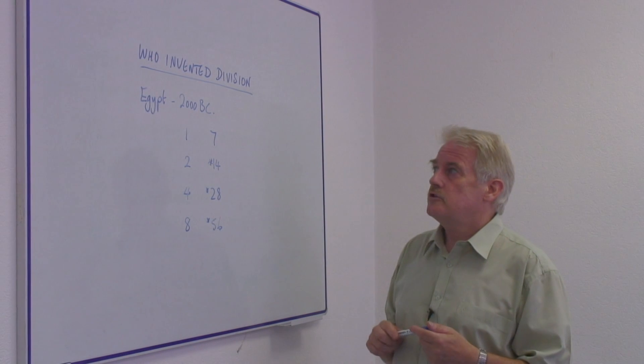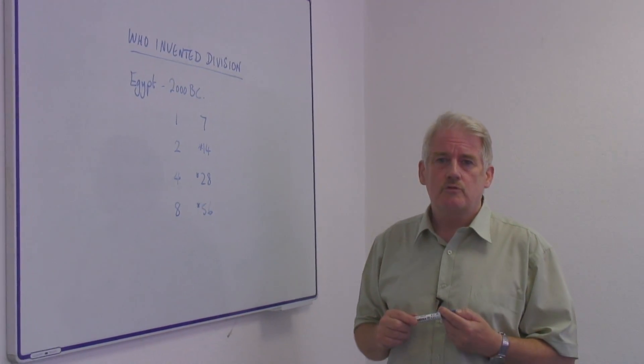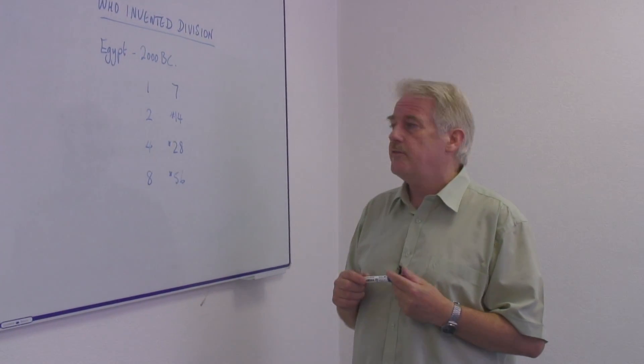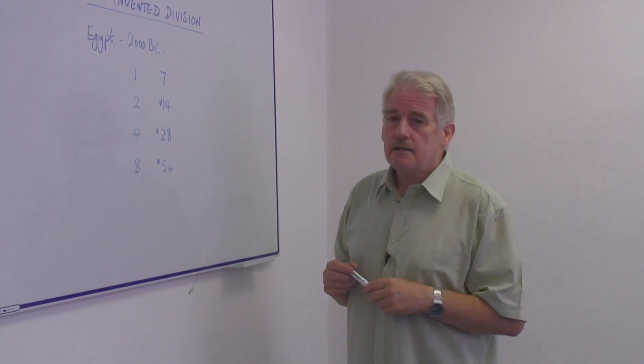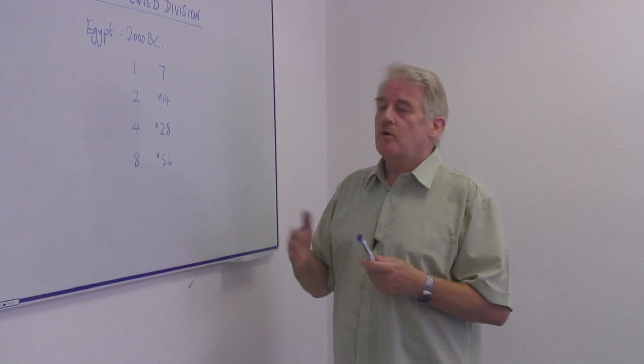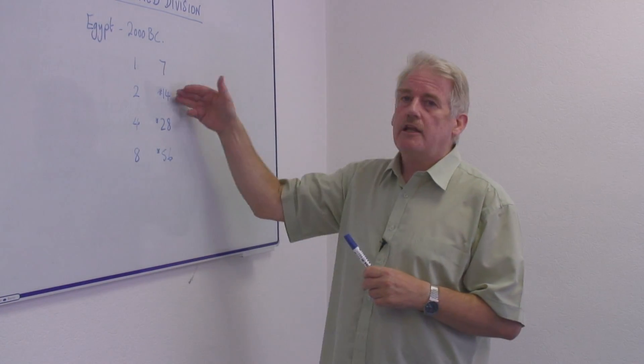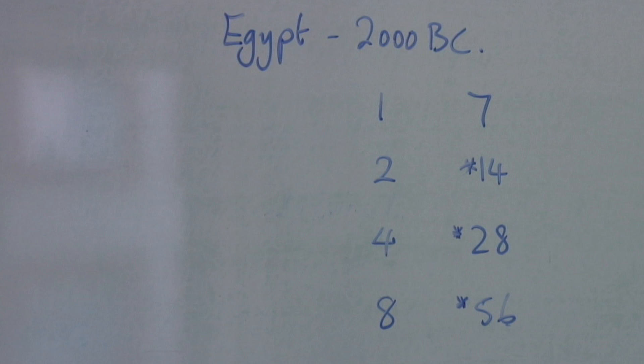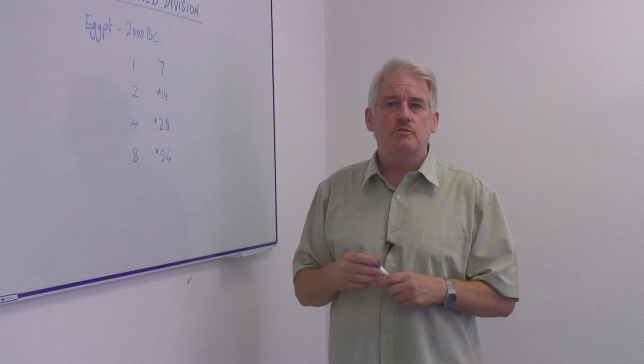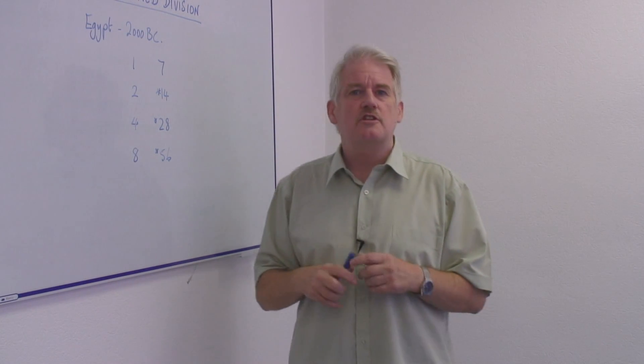And in fact, the Egyptians' way of doing division was rather complicated, it was rather difficult. But they basically started, if they wanted to divide something by seven, what they did is they kept on doubling up numbers until they came to a number which was somewhere near the one they wanted to divide.